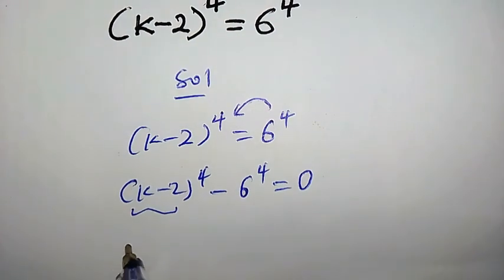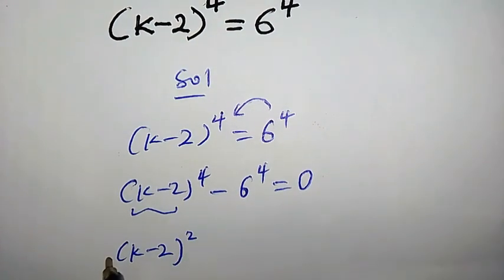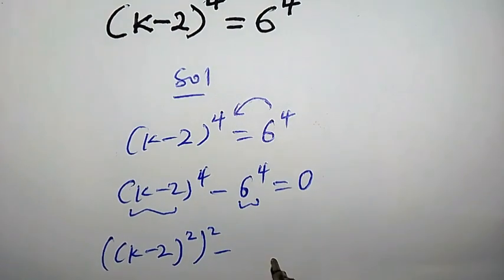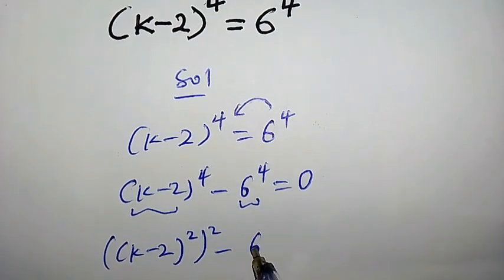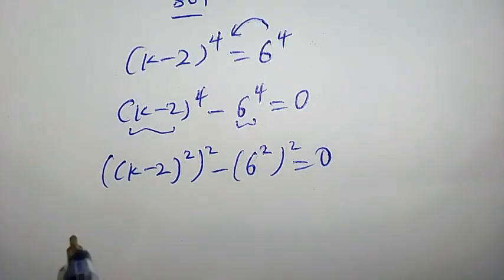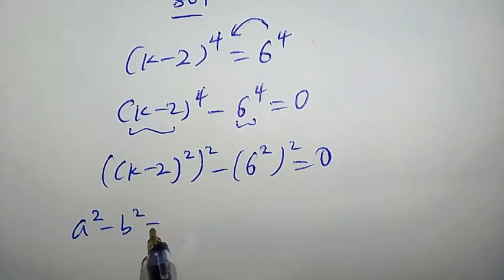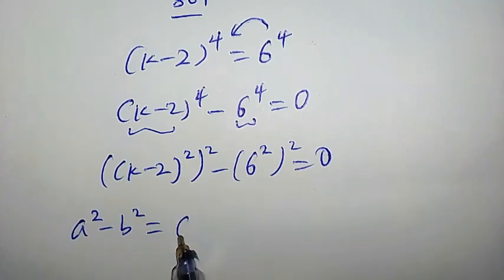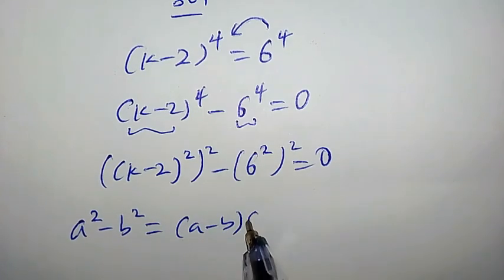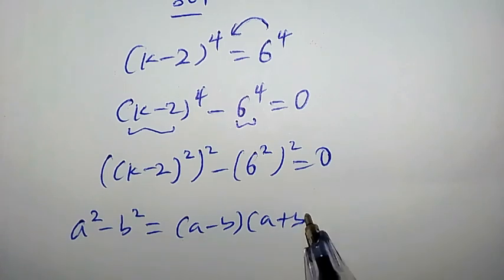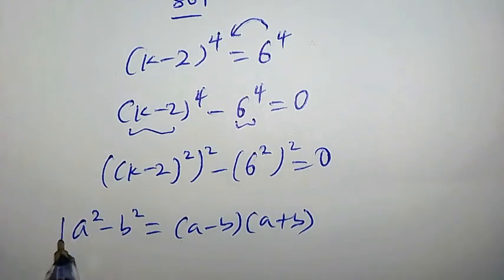Now let's break down each of these terms. This can be written as k minus 2 to the power of 2 times 2, minus 6 to the power of 2 times 2, equal to 0. Now recall that whenever we have a to the power of 2 minus b to the power of 2, it equals a minus b times a plus b. Take note of this.